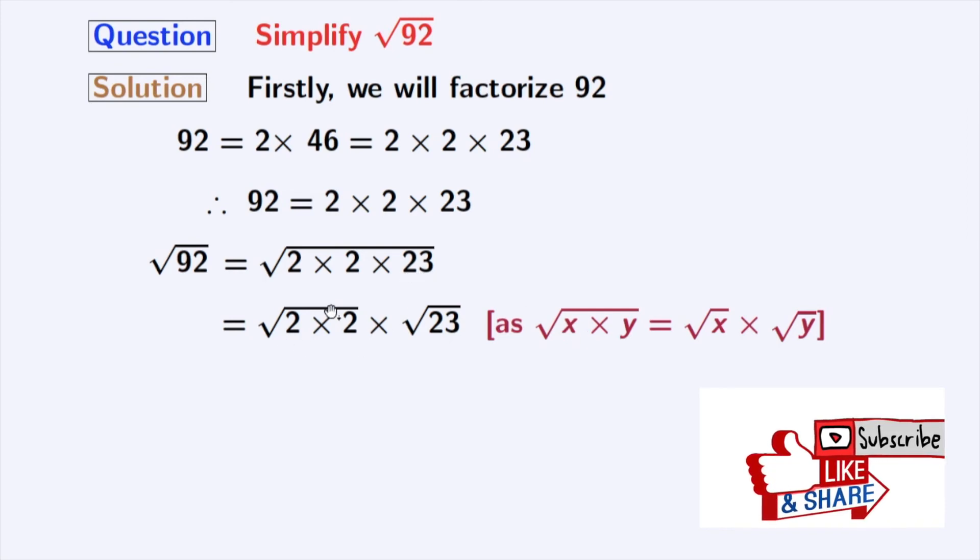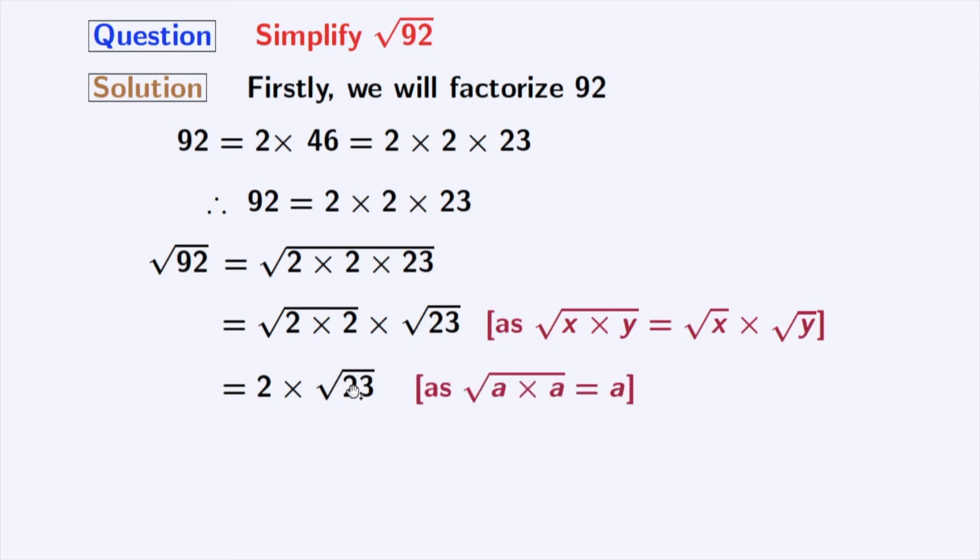Now, from the first square root we get 2, and the second square root, that is square root of 23, remains the same. In the first square root, we have used the rule of square root of a times a is equal to a, where a is 2.